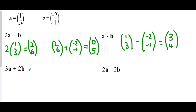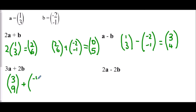For 3a plus 2b: 3 lots of vector a (one, three) means 1×3=3 and 3×3=9, giving 3a as three, nine. Then 2b means 2 times vector b (negative two, negative one): 2×(−2)=−4 and 2×(−1)=−2. Adding together: x values 3 plus negative 4 is negative 1; y values 9 plus negative 2 is 7. The resultant vector is negative one, seven.